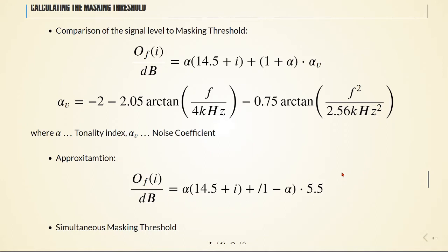If a tone is masking a noise-like signal, where alpha is equal to 1, the threshold is set to 14.5 plus I dB below the value of the LS I.